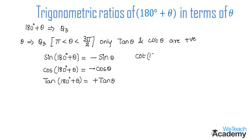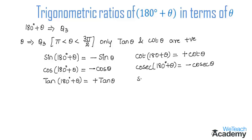Similarly, cot(180° + θ) = +cot θ, cosecant(180° + θ) = −cosecant θ, and secant(180° + θ) = −secant θ. Now let us proceed and discuss a few examples where we will use these formulas to find the results.